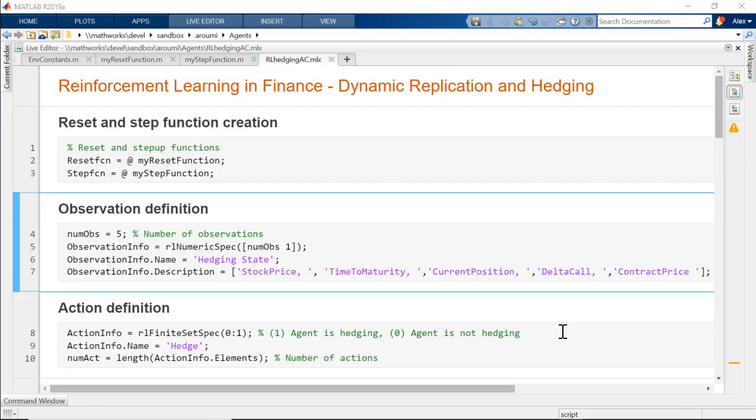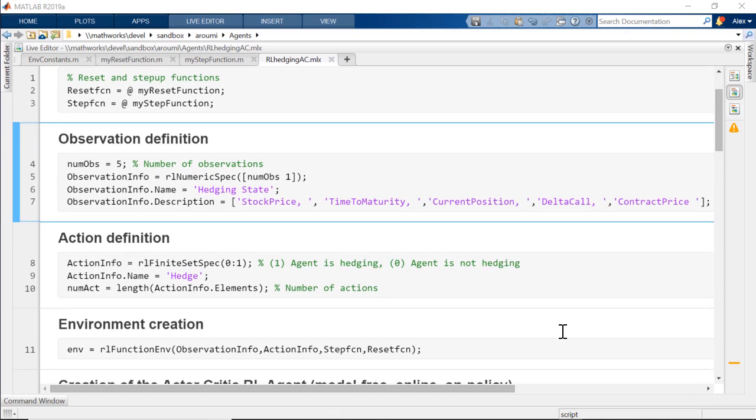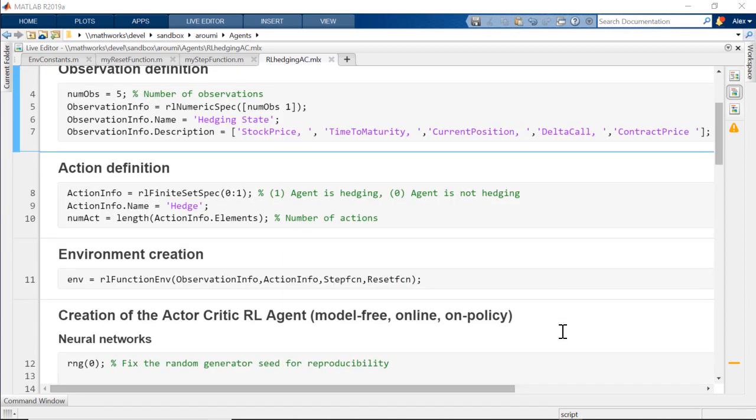The observations include the stock price, time to maturity, and agent stock holdings. The action is whether to hedge or not. The observations, actions, reset and step functions form the environment.